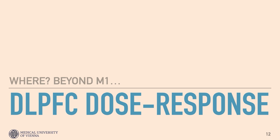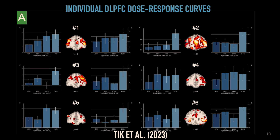How does it look if you go beyond the motor cortex to investigate other targets of interest in depression treatment, like the dorsolateral prefrontal cortex? Using a similar approach, we stimulated again at 80 to 110 percent, but now on the left DLPFC. Most subjects show an increase in BOLD with increasing intensities, but there are also subjects who showed no effect below 100 percent of motor threshold, or only an effect at 110 percent. There is much more variability compared to motor cortex activation.